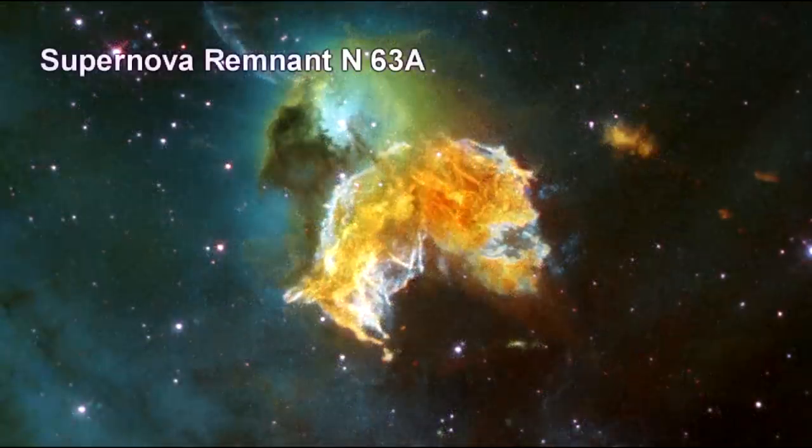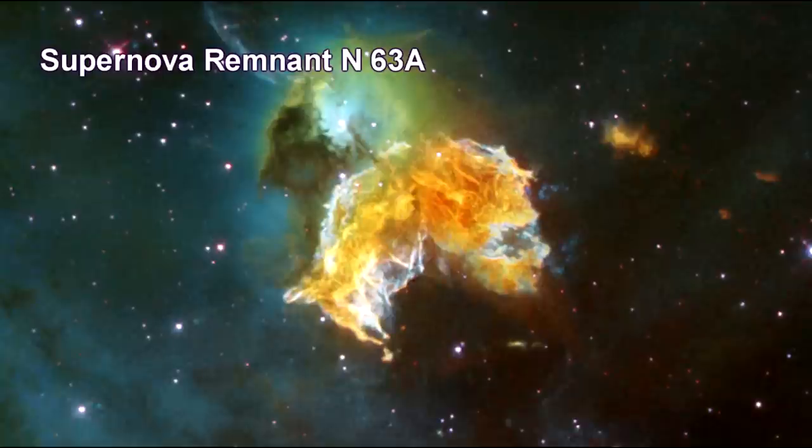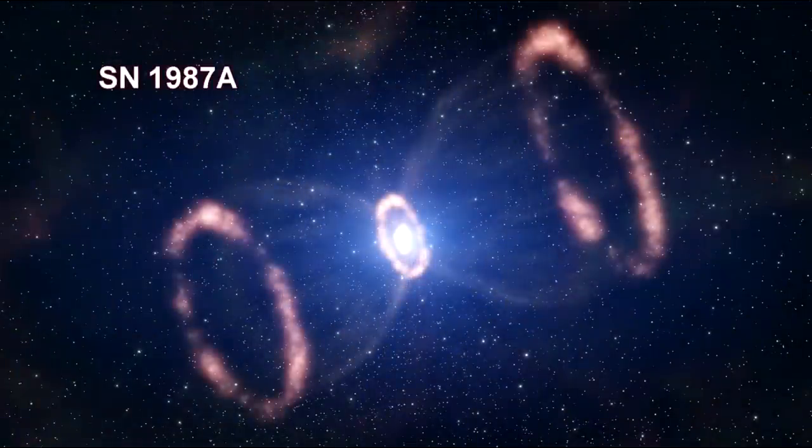You may have noticed that as we went through our segment on supernova, N63A and 1987A were listed at 160,000 light years away or greater. That was further than the maximum extent of our galaxy. That put these objects outside the Milky Way. They were actually in the LMC dwarf galaxy.